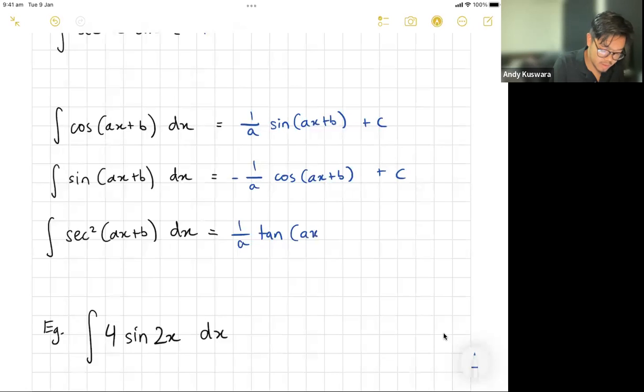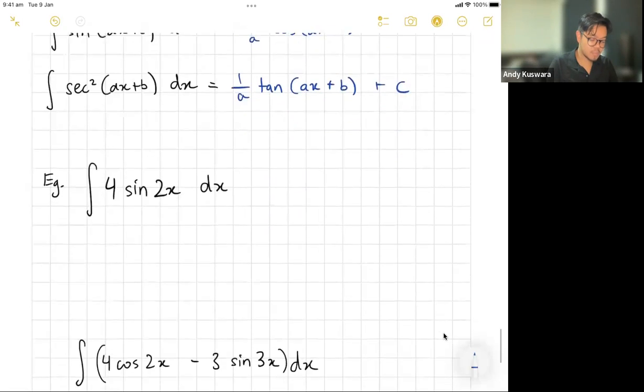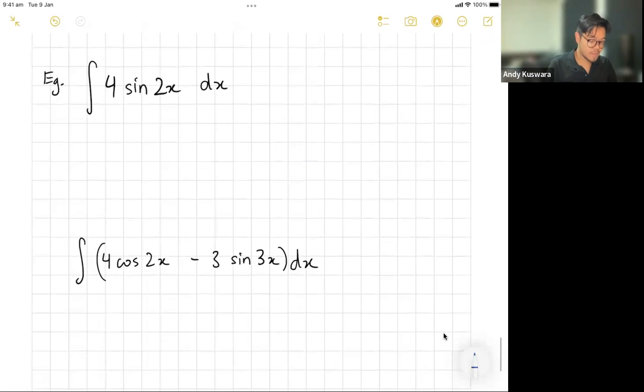Tan(ax + b) plus c. Okay, there's your integrations. Now let's use it in a couple examples here. If I have the integration of 4 sine 2x, all that really means for us is I know sine will integrate to negative cosine.